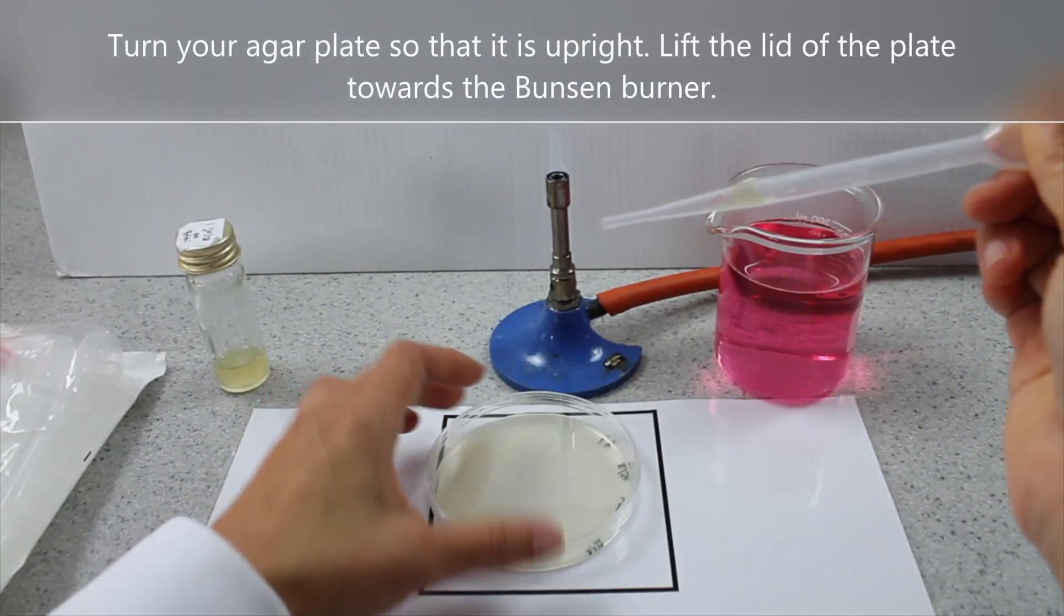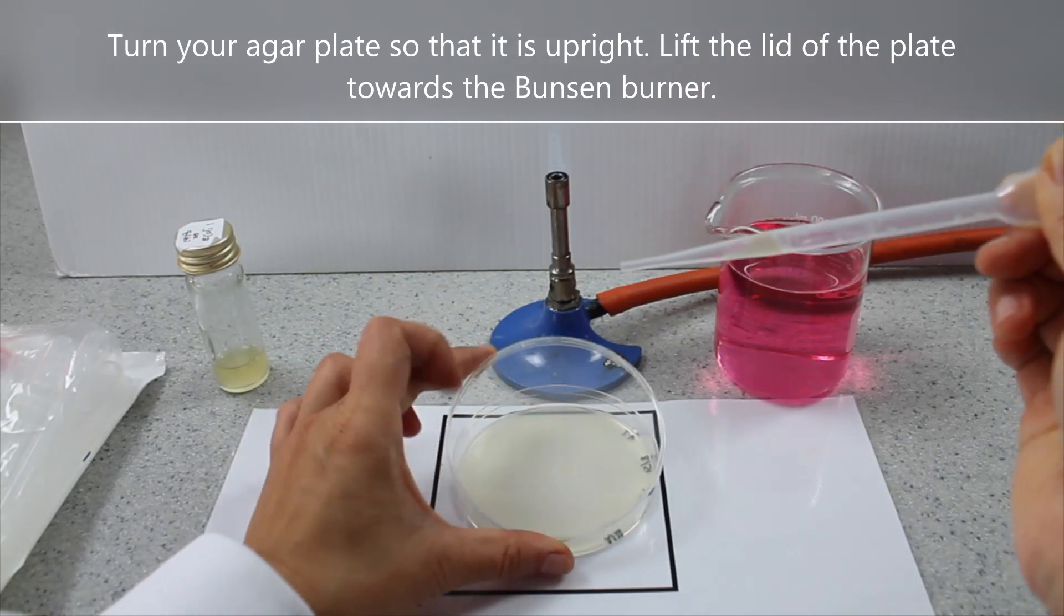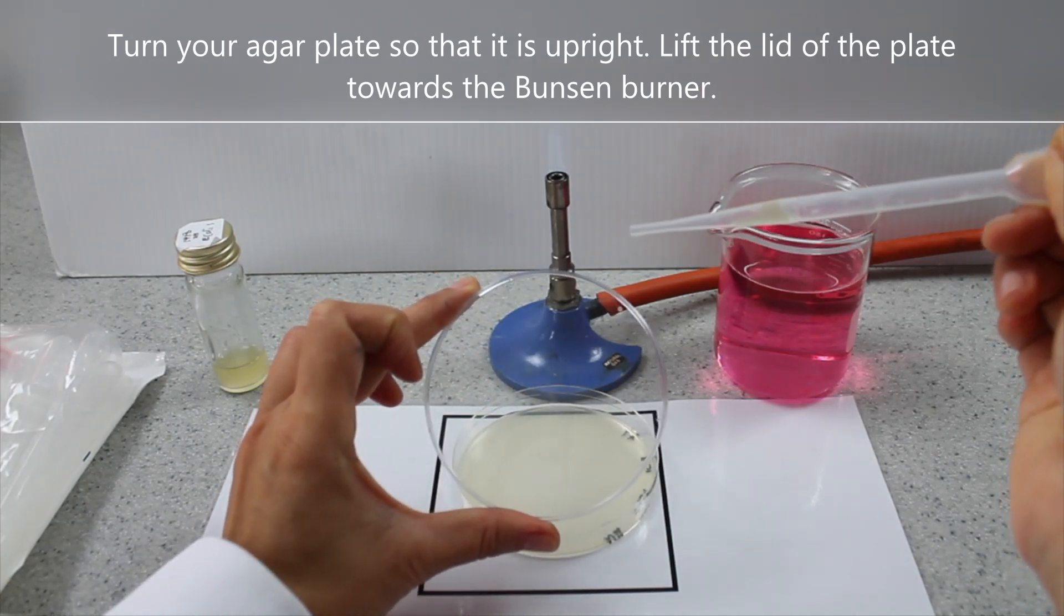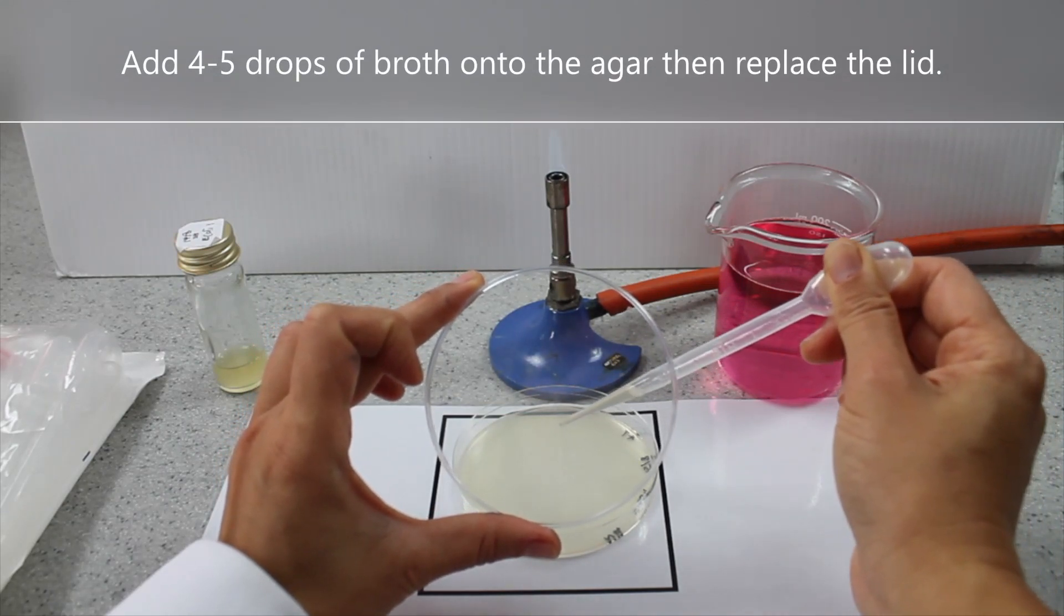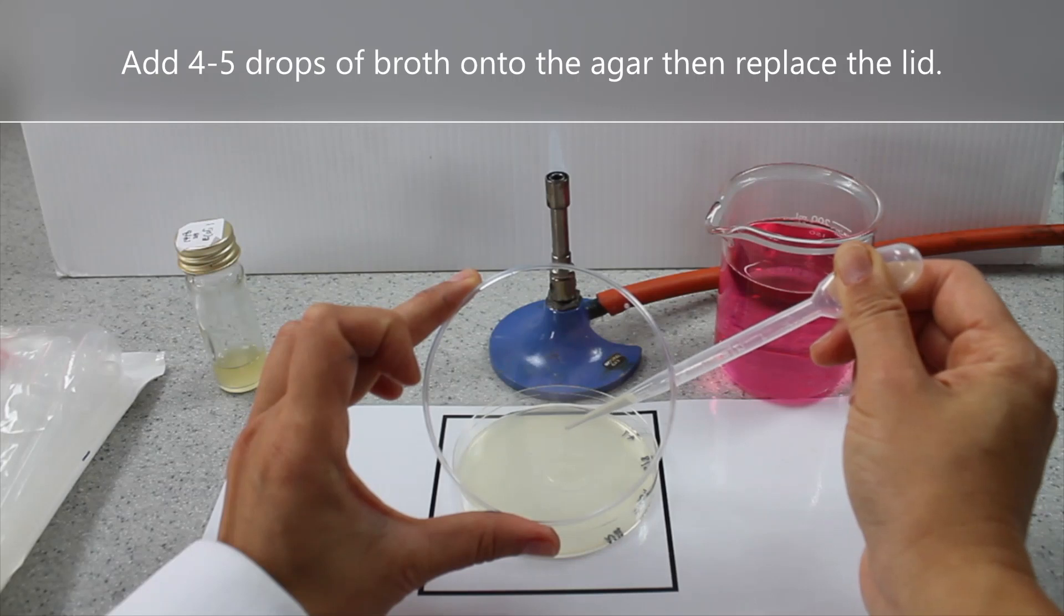Turn your agar plate so that it is upright. Lift the lid of the plate towards the Bunsen burner. Add four to five drops of broth onto the agar then replace the lid.